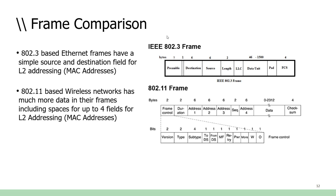An 802.3 data frame is simple: source MAC, destination MAC, data, and frame check sequence. An 802.11 frame is far more complex — it can carry up to four unique MAC addresses, because you may need to identify both endpoints and wireless bridge devices in the path. Remember, 802.11 only works at Layer 1 and Layer 2, so all addressing must be handled at the MAC layer.